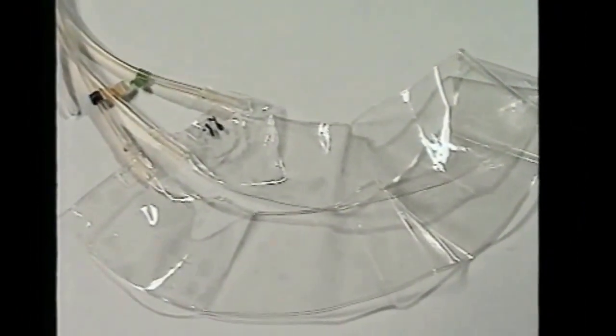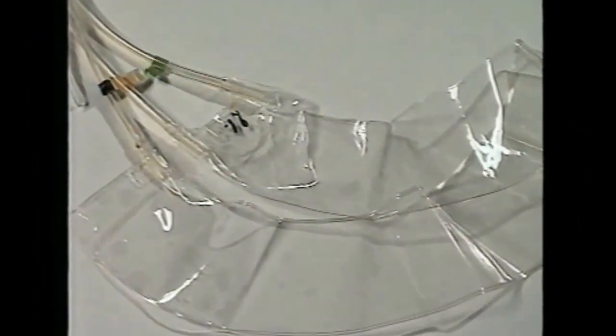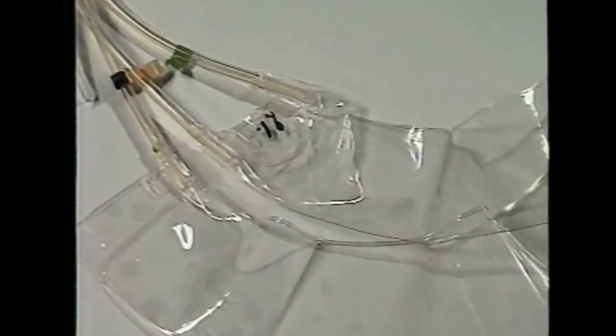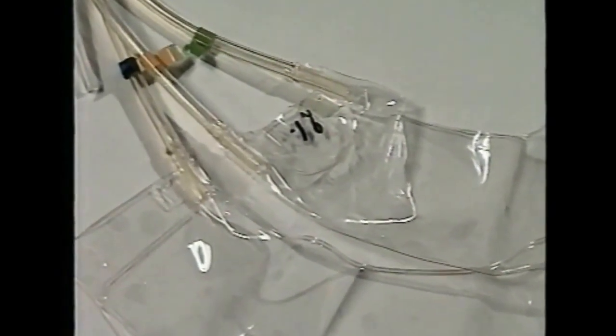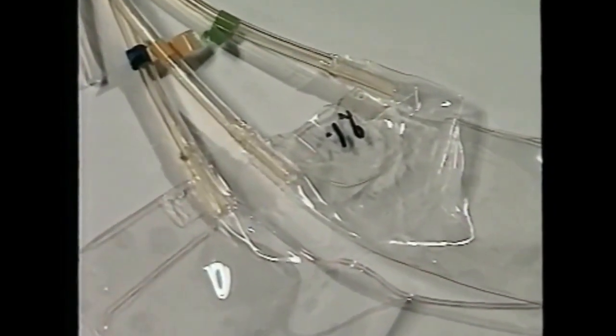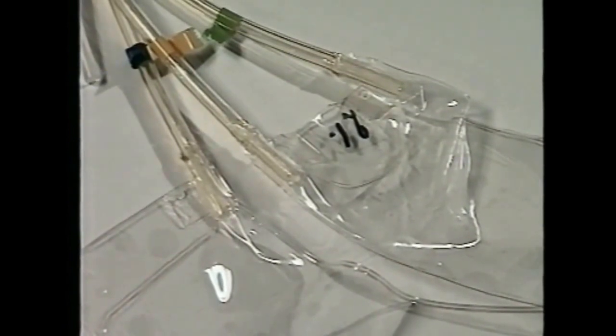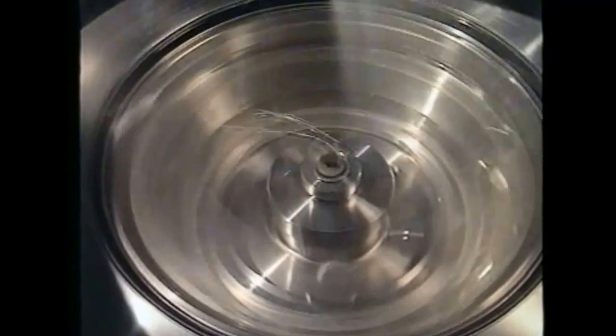To produce a completely sealed system, the Centritech cell uses a bladder with feed and return tubes welded into it to form a completely closed system. The bladder is fitted inside the bowl of the centrifugal separator.